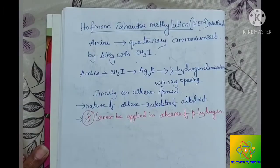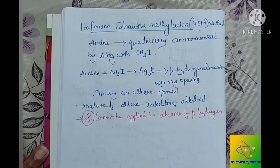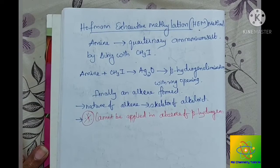Now let's get started. In this video we are going to discuss about the Hofmann exhaustive methylation, that is HEM method. This method is mainly used to find the skeleton of alkaloid. It is basically used in the structural elucidation of any alkaloids.